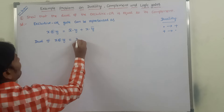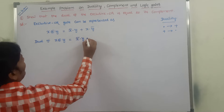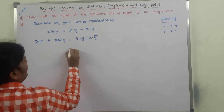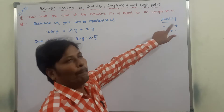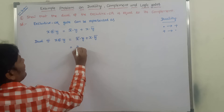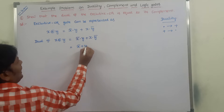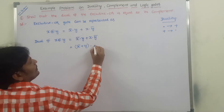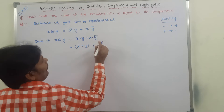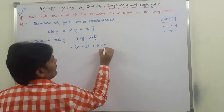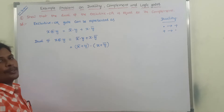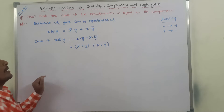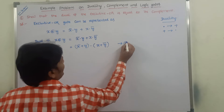So here, first we write the exclusive OR formula, then dot is replaced by plus and plus is replaced by dot. That gives us X̄+Y multiplied by X+Ȳ. This is the duality of the exclusive OR gate, and this can be denoted as Equation 1.